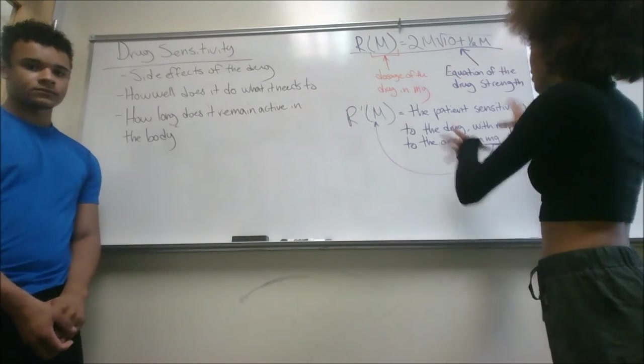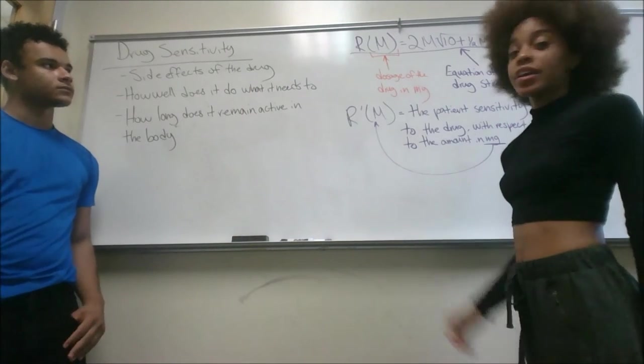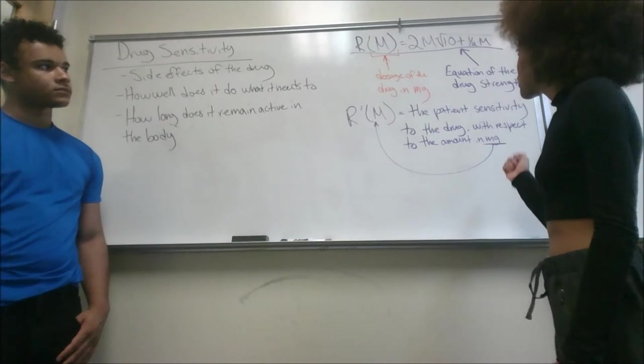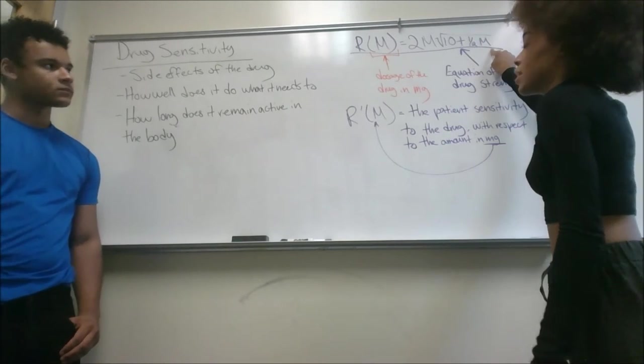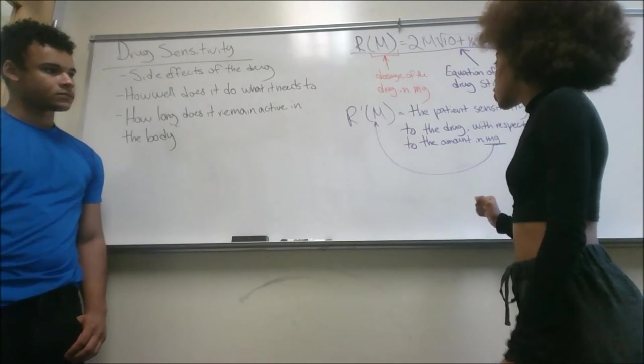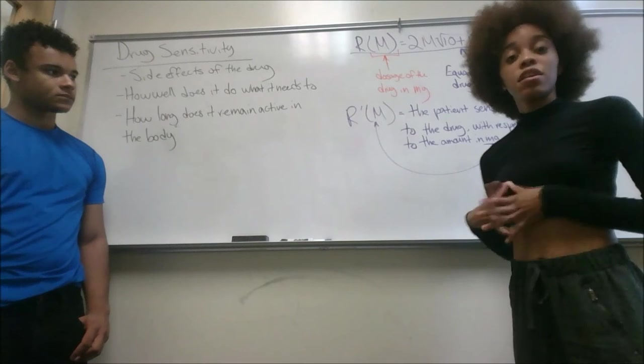Over here, we have the overall equation of the drug strength. It's represented by R of M, where M is the dosage of the drug in milligrams, and it equals 2M times the square root of 10 plus 1 half M. When you take the derivative of this equation, it will give you the patient sensitivity to the drug with respect to the amount in milligrams.